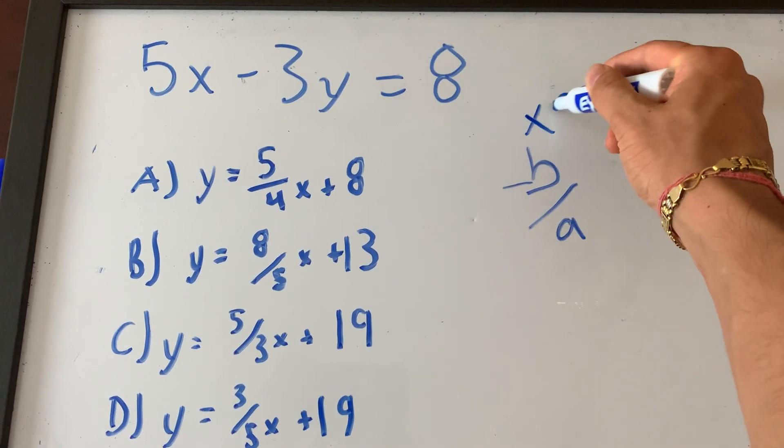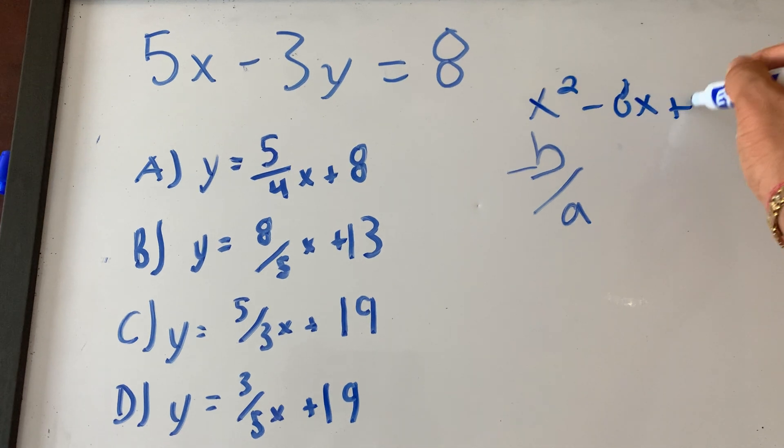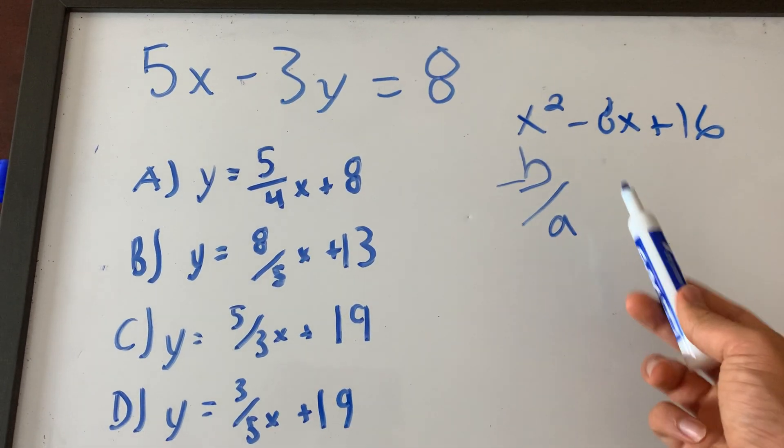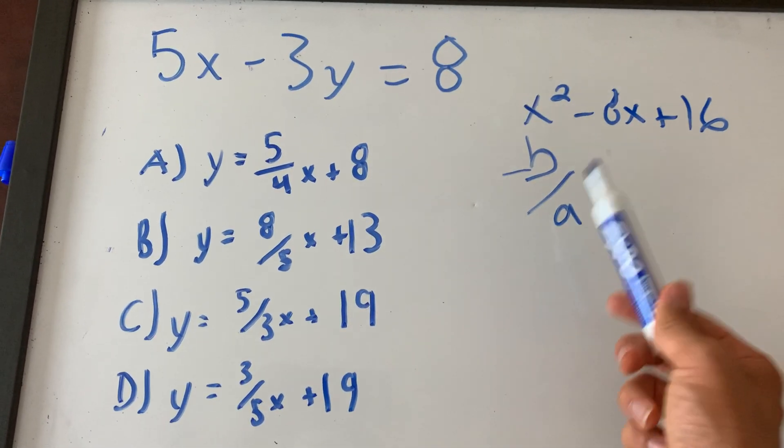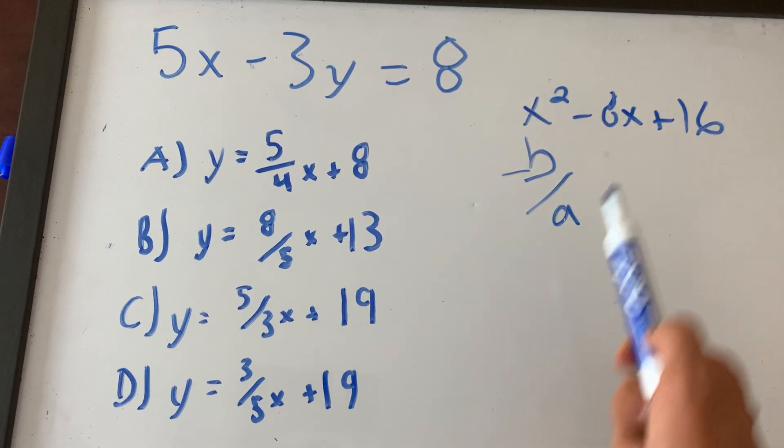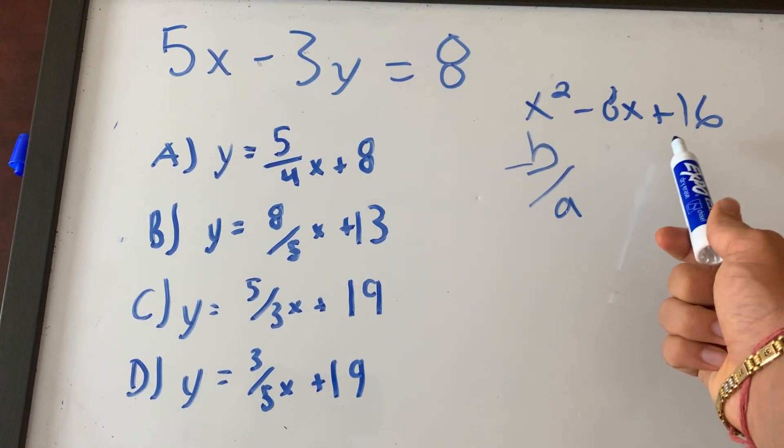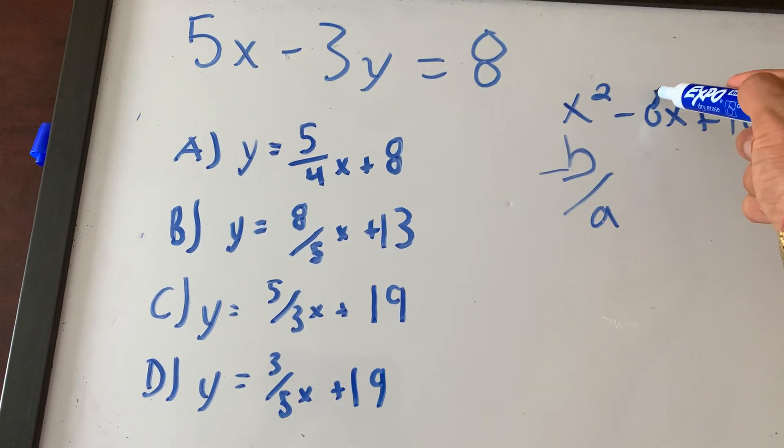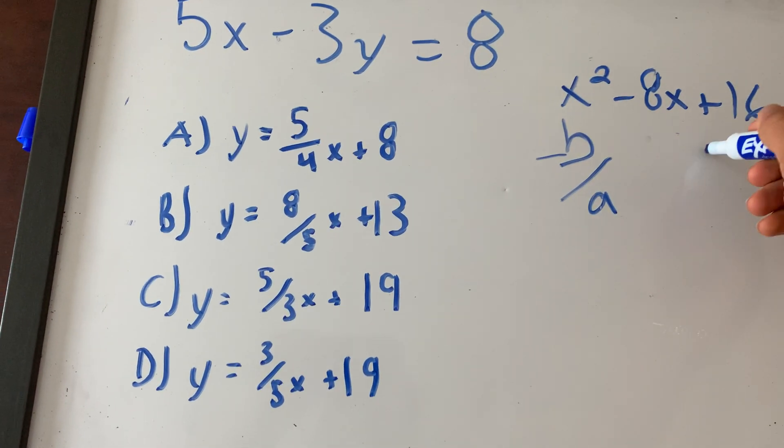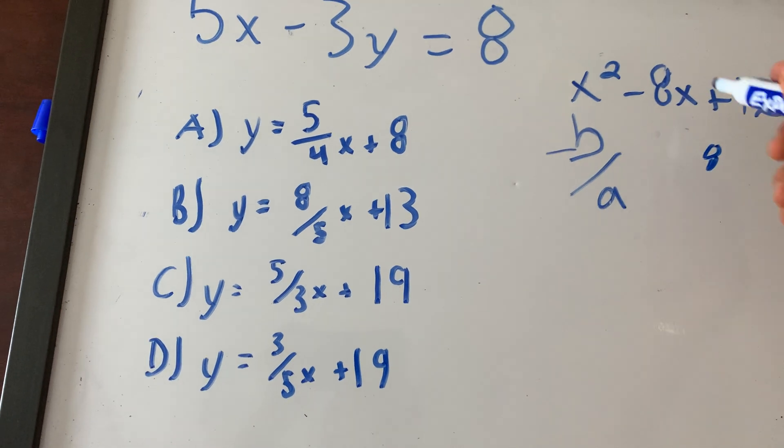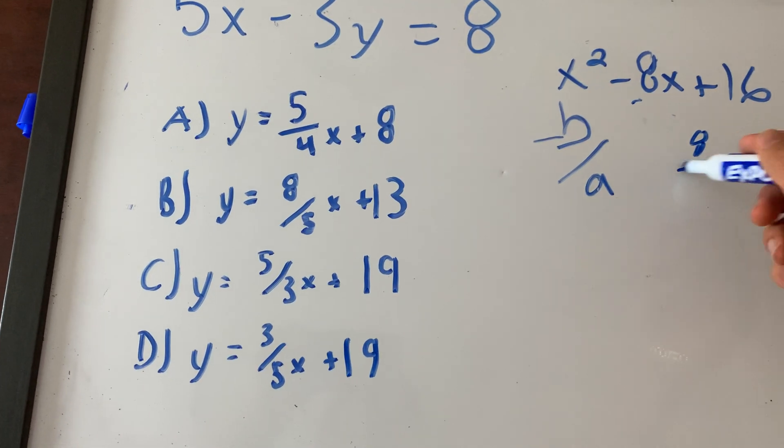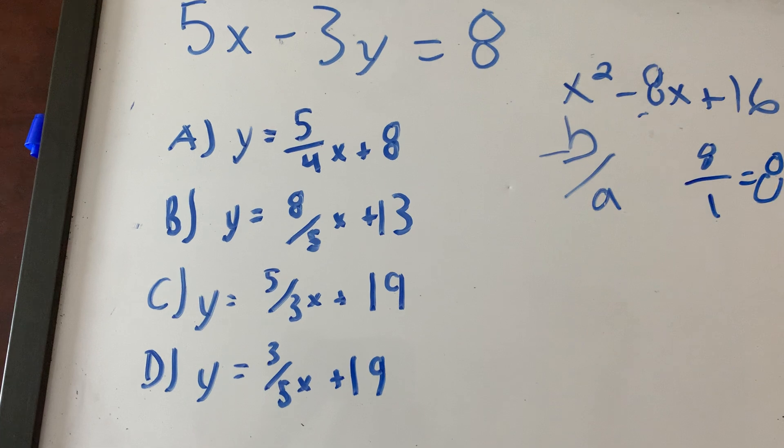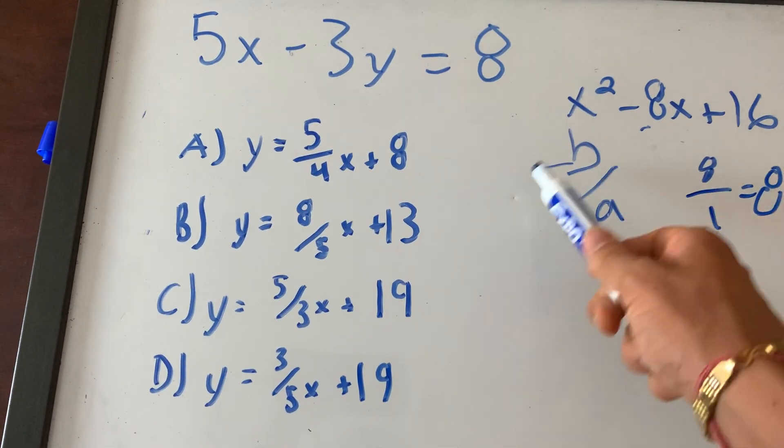So if you see like x squared minus 8x plus 16, if I asked you right now, what is the sum of the solutions of this equation, what would you do? Would you try to factor, which would be x minus 4 squared, or would you be faster and be diligent and do negative b over a, so negative negative 8, which is 8, over 1, which is 8. So the sum of the solutions for this equation is 8.